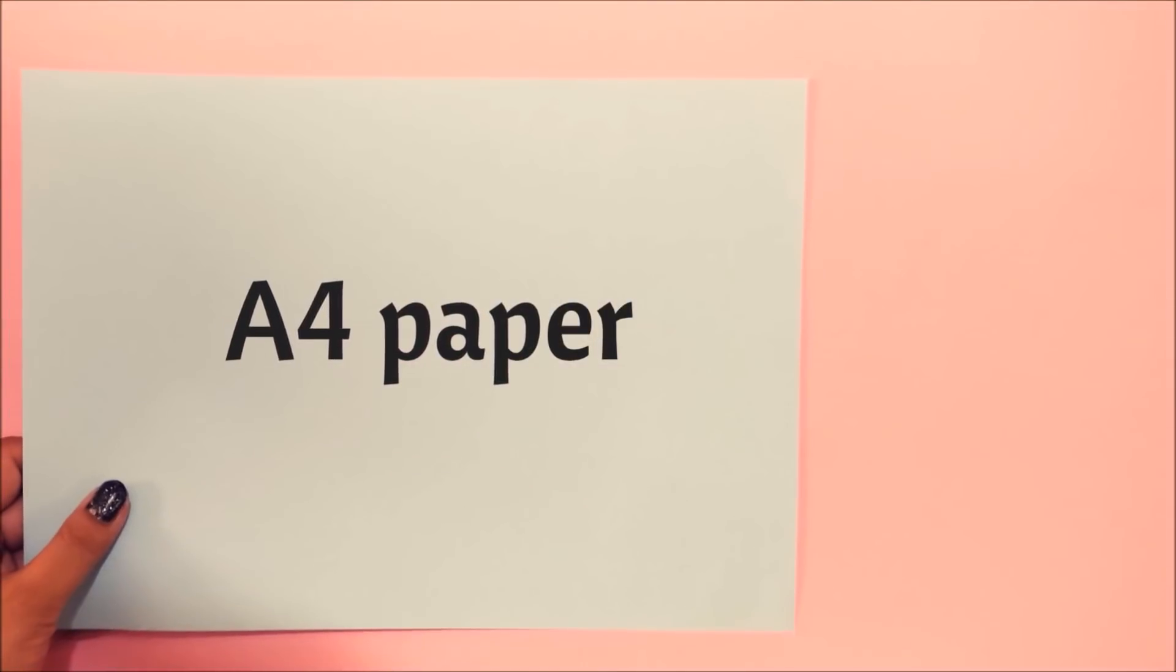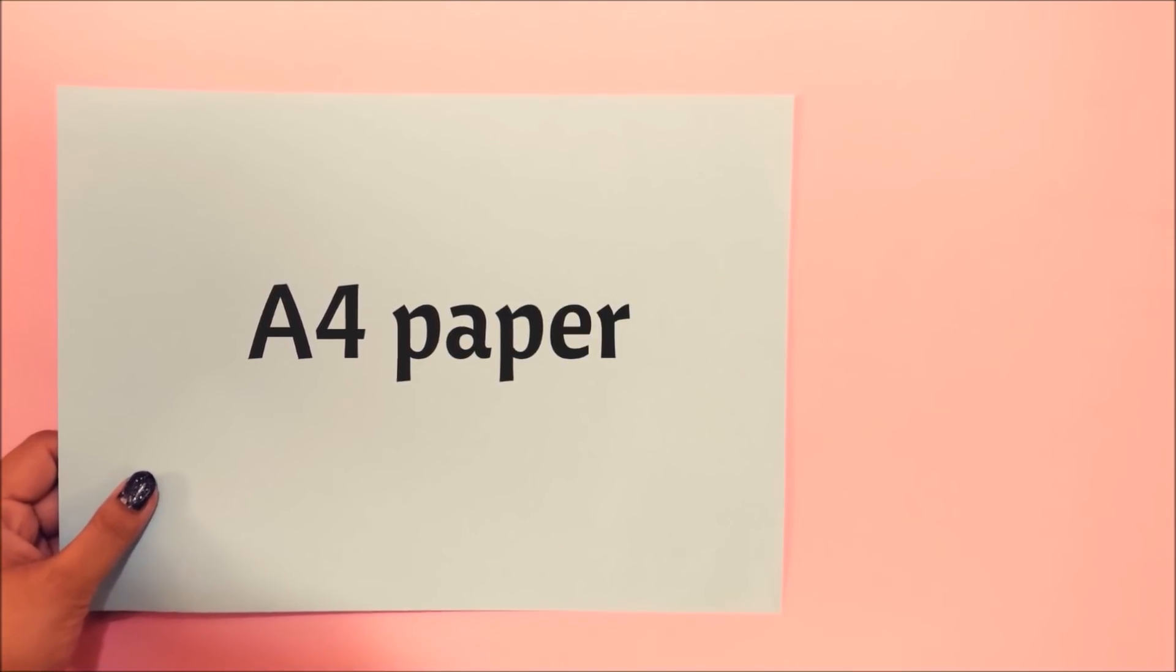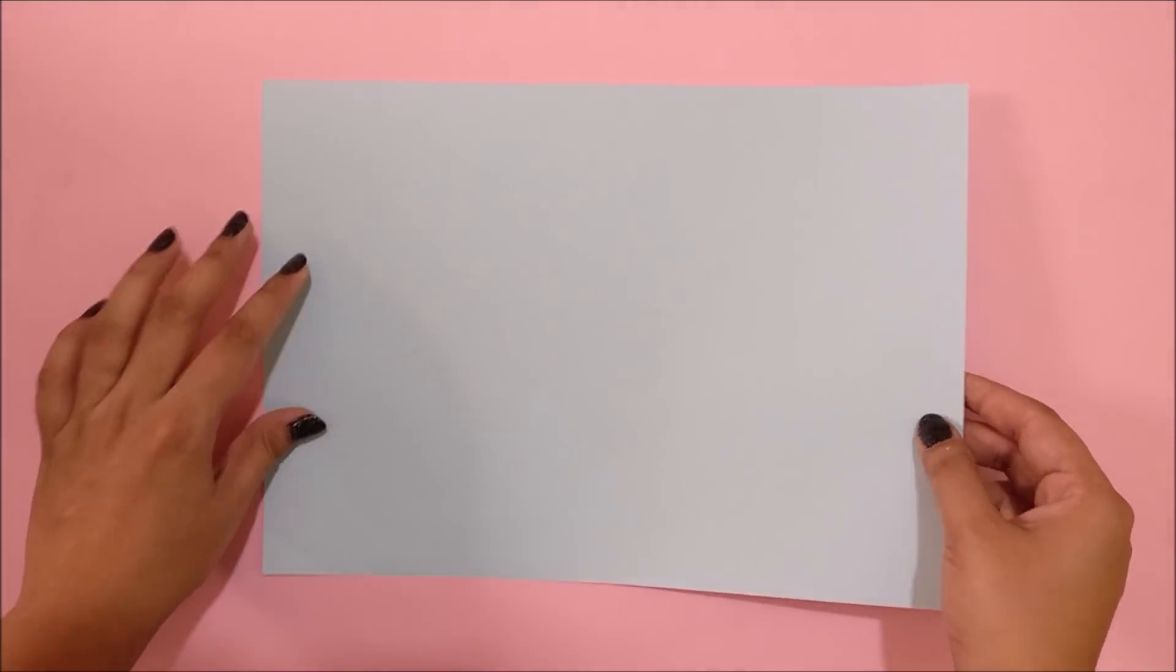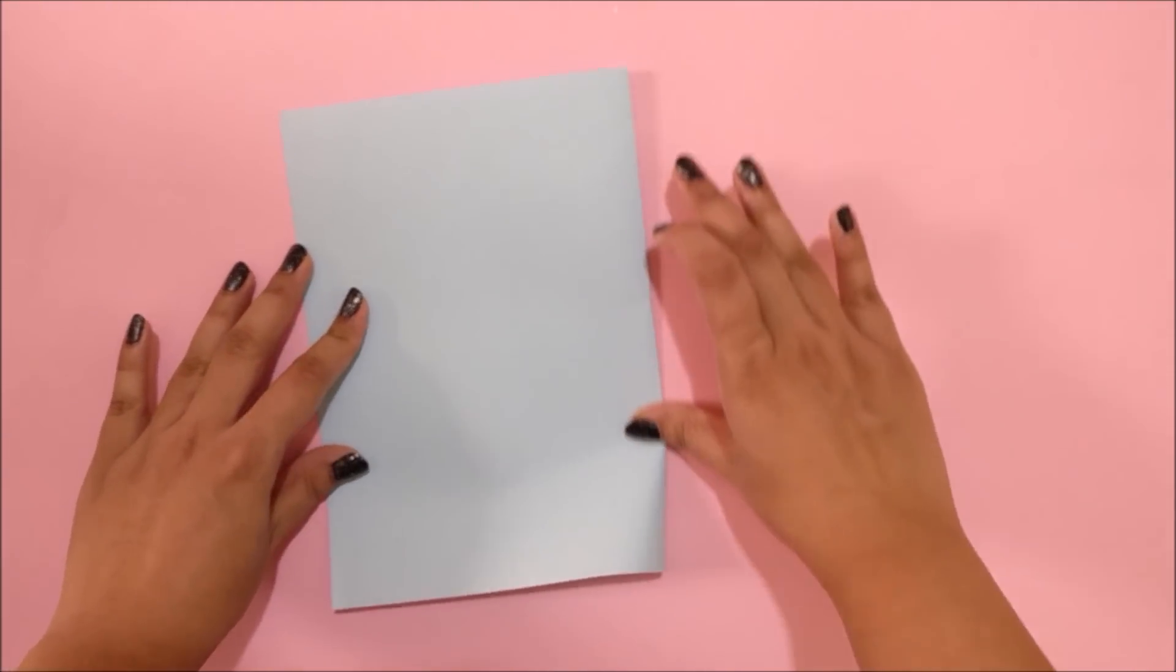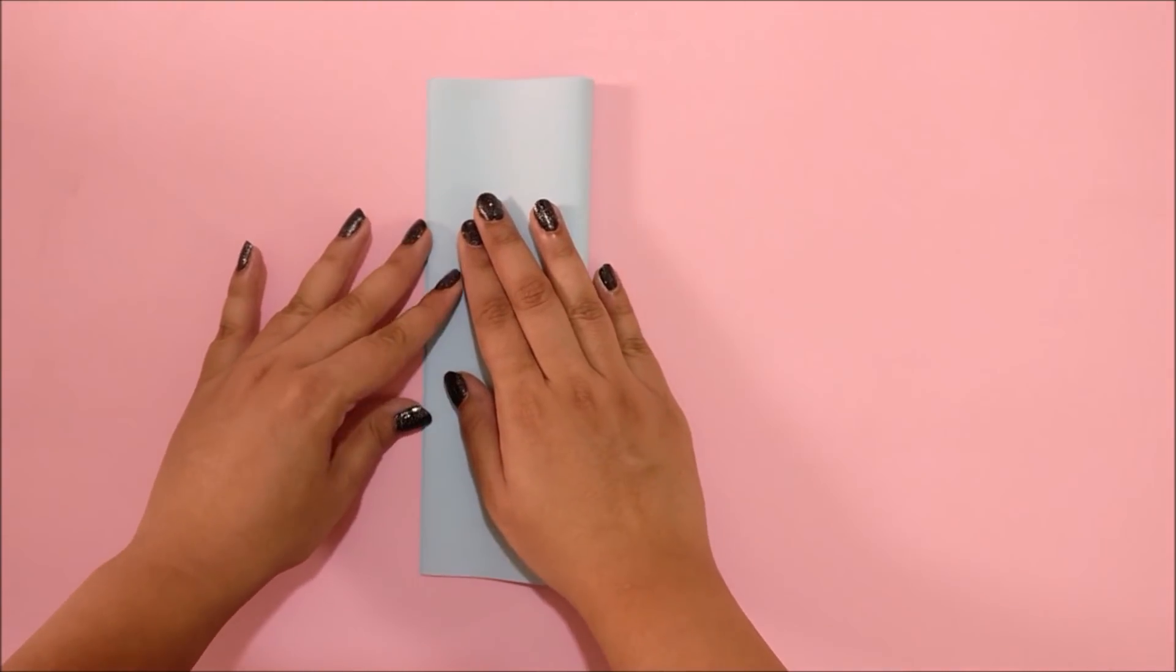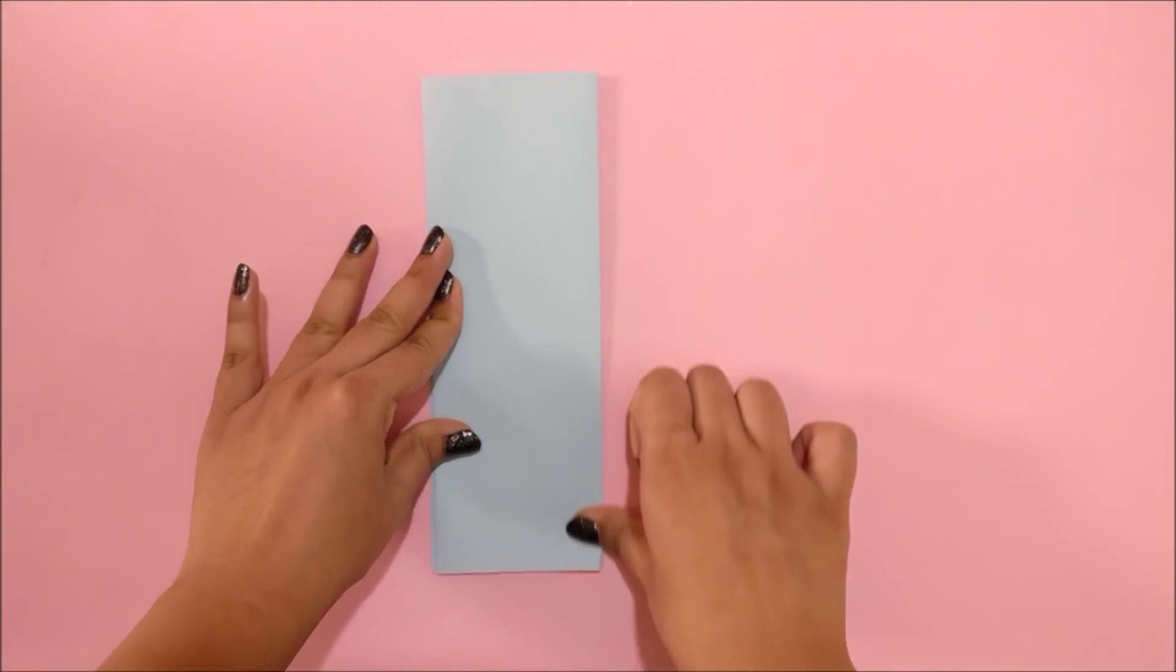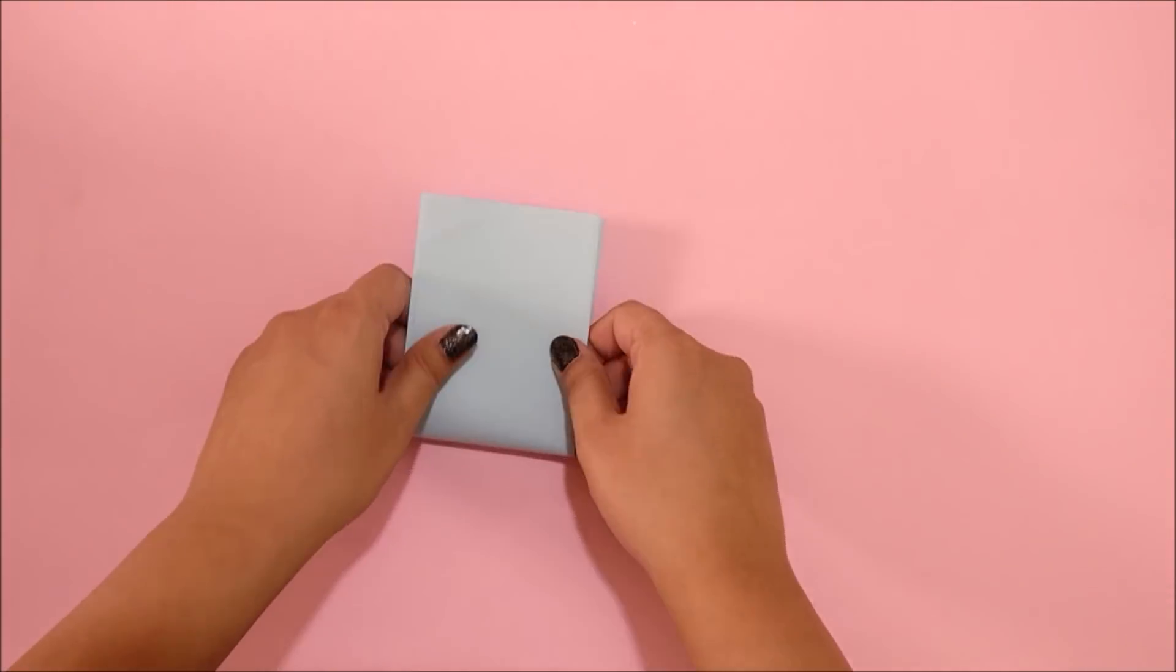For this DIY, you will first need an A4 size paper to make pages for our mini book. Now take a single sheet of A4 size paper and then fold it in half like I am doing here. Then again fold it in half and make a crease line. Then make one fold on the longer side.